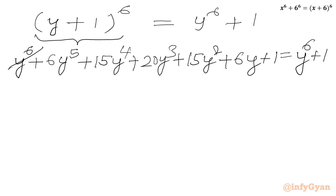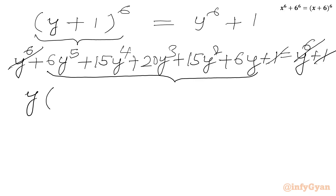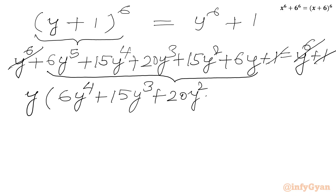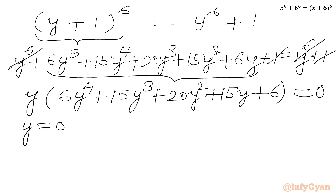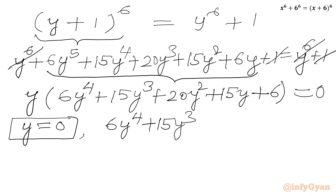We cancel y power 6 plus 1 from both sides by subtracting. On the RHS we have 0, and on the LHS we have 5 terms. We can take y as a common factor, giving: y times the bracket 6y power 4 plus 15y cubed plus 20y squared plus 15y plus 6 equal to 0. Using the product zero rule, either y equal to 0 or 6y power 4 plus 15y cubed plus 20y squared plus 15y plus 6 equal to 0.